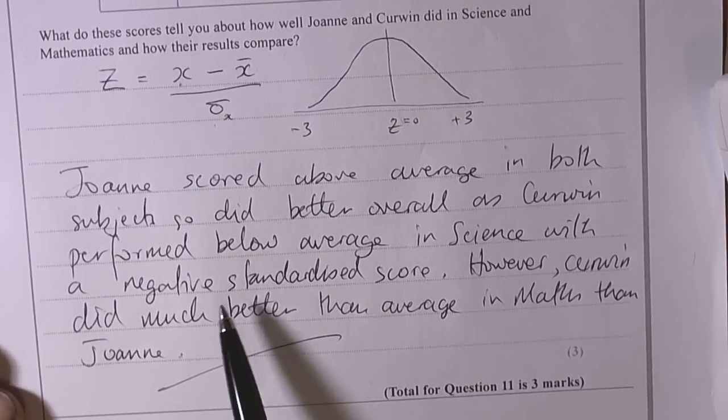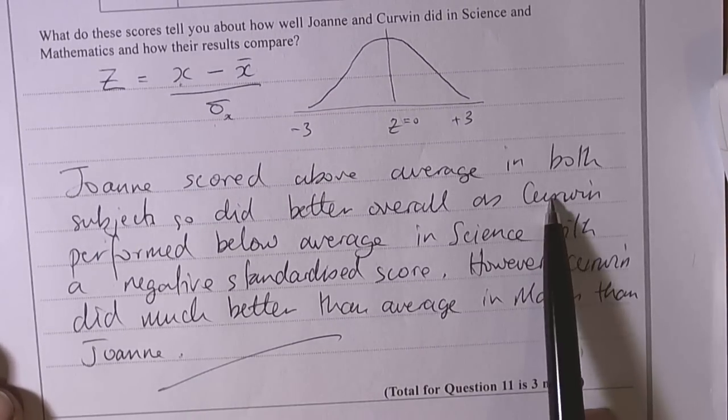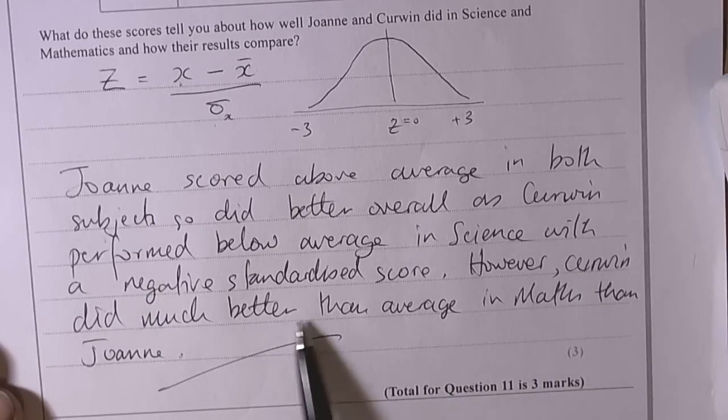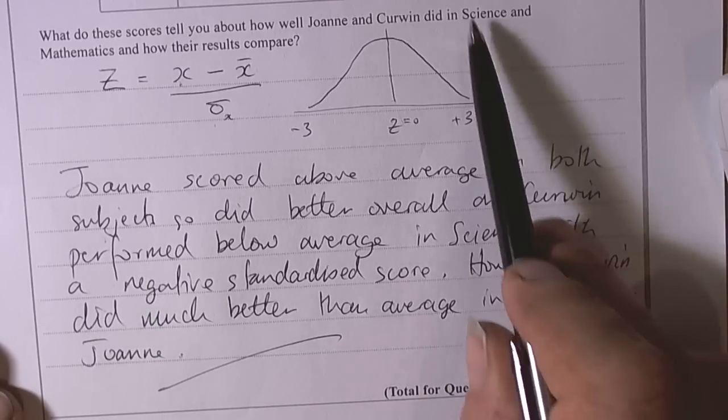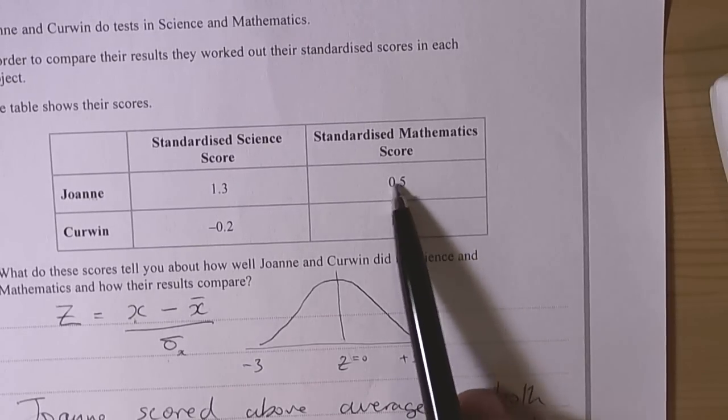So that's the kind of answer we give to this kind of question. Joanne scored above average in both subjects so did better overall as Kerwin performed below average in science, and then however Kerwin did much better than average in maths than Joanne with his score of 1.4 compared to 0.5.